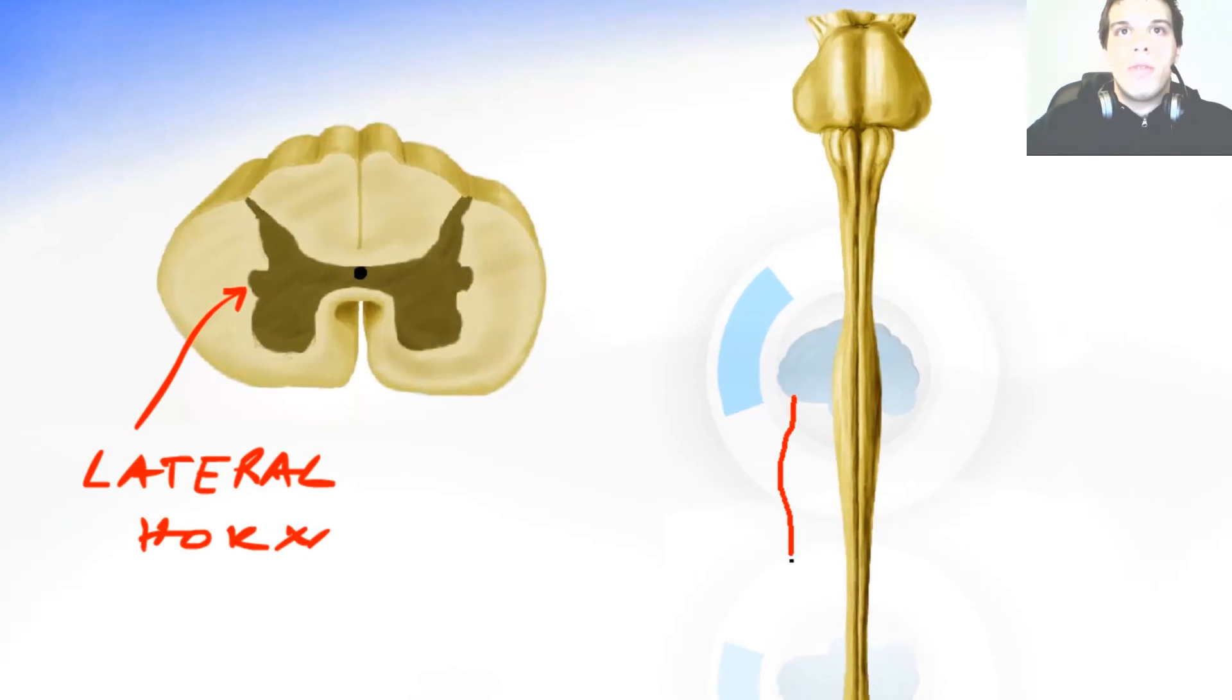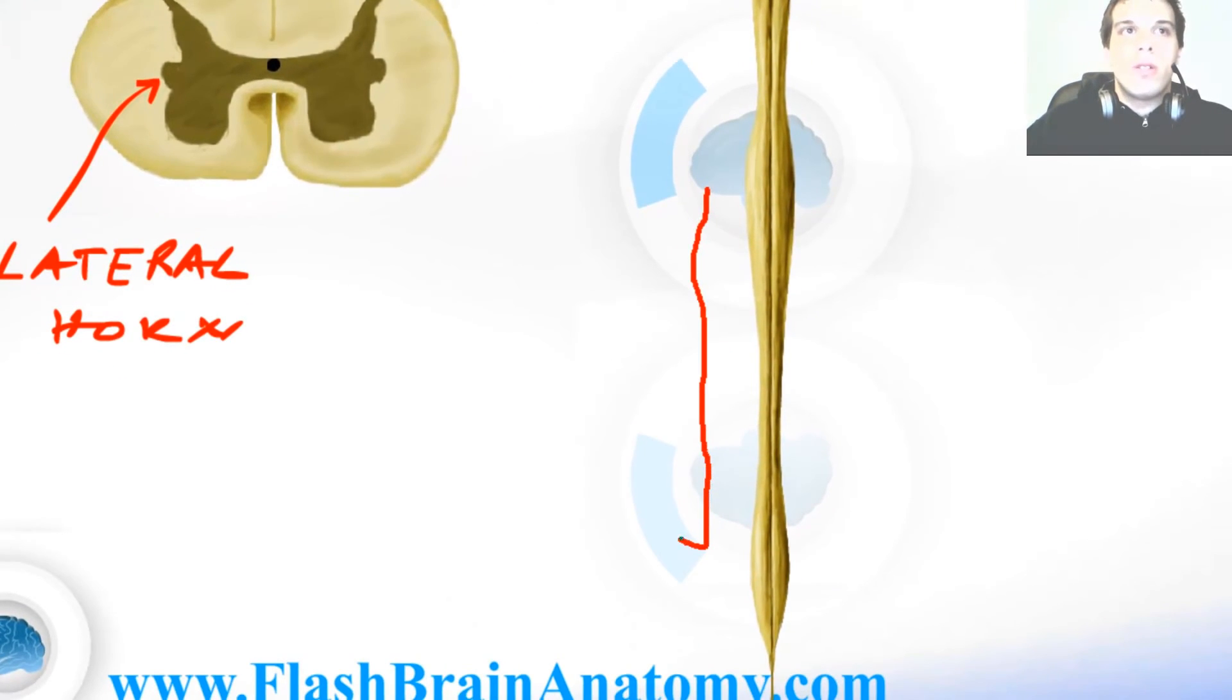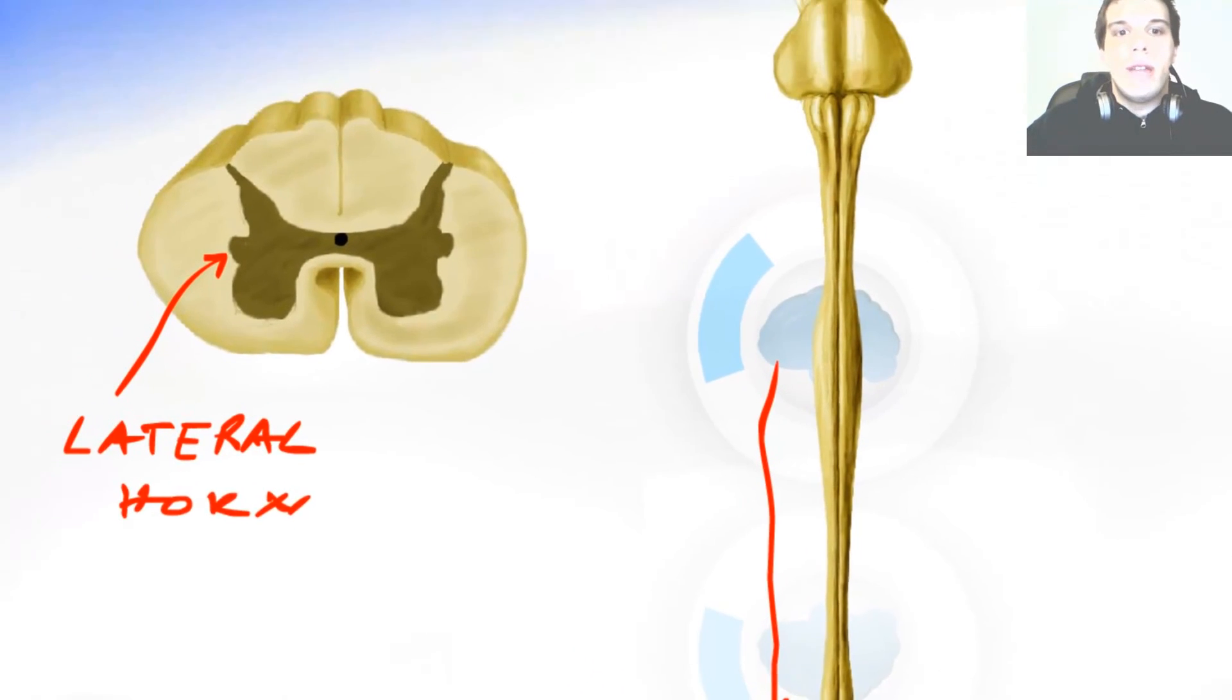This lateral horn can be found in all segments all the way till the first two lumbar segments over here. And then further it cannot be found anymore. You cannot see the lateral horn. So L2 is the place where the lateral horn ends.